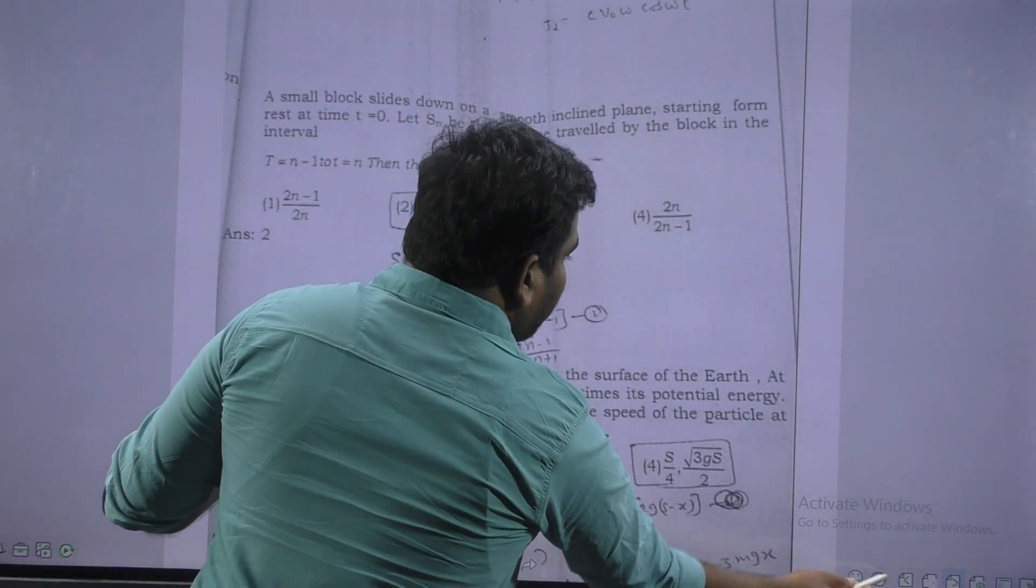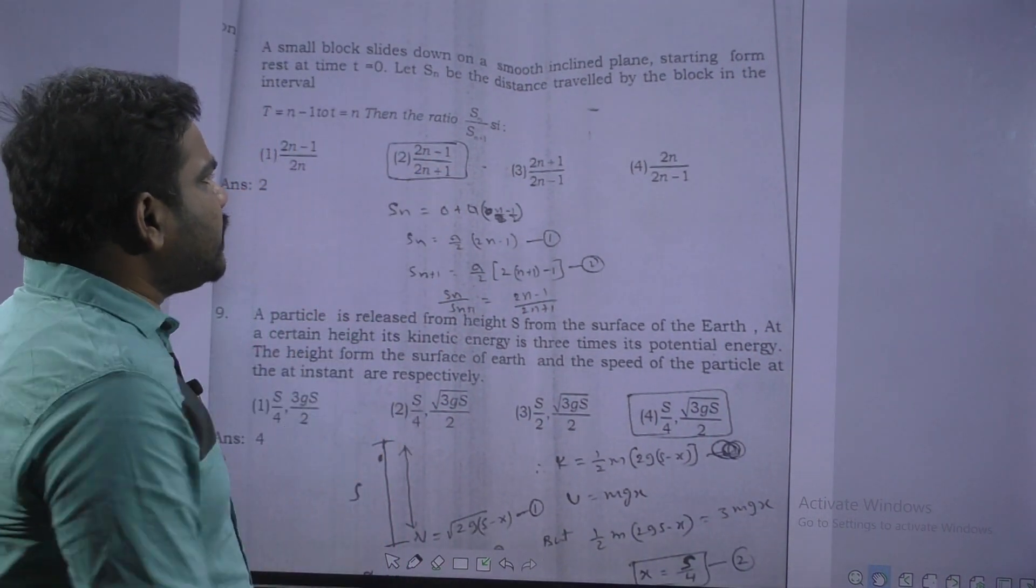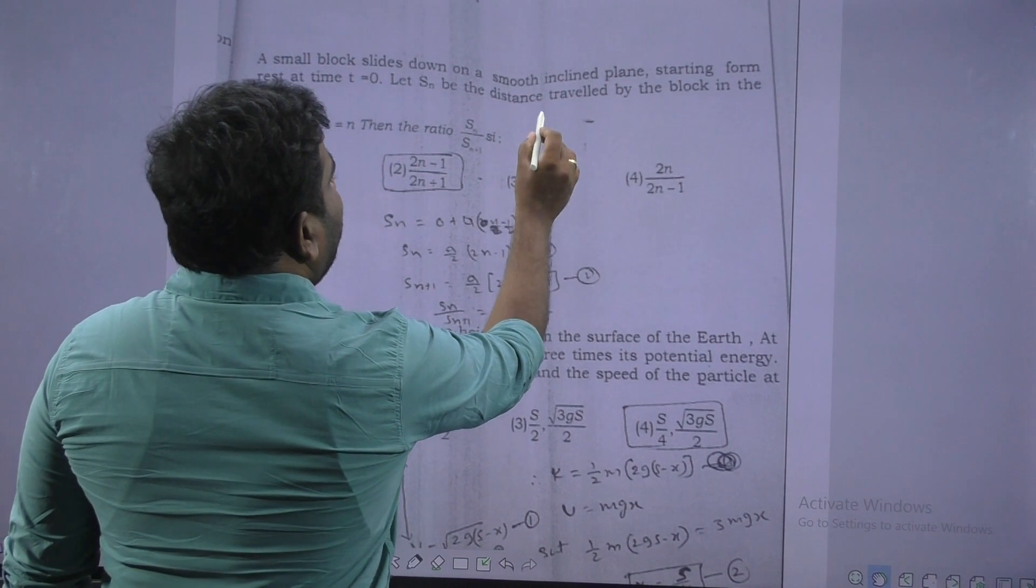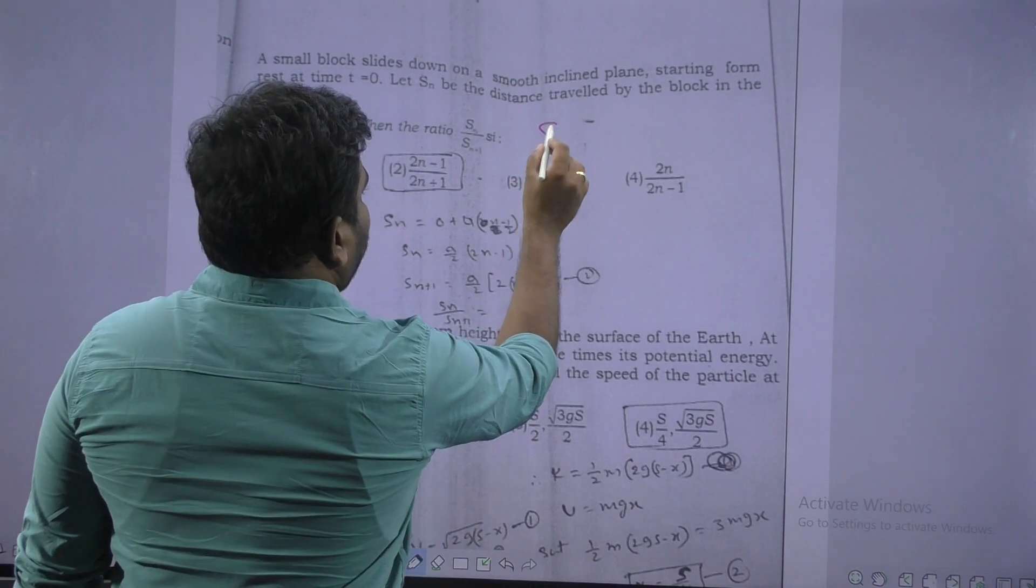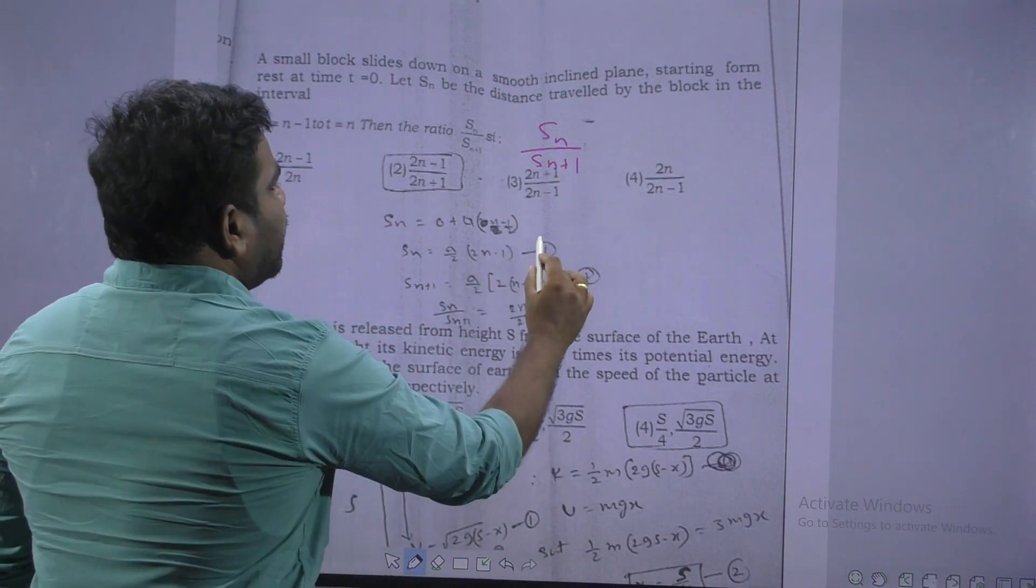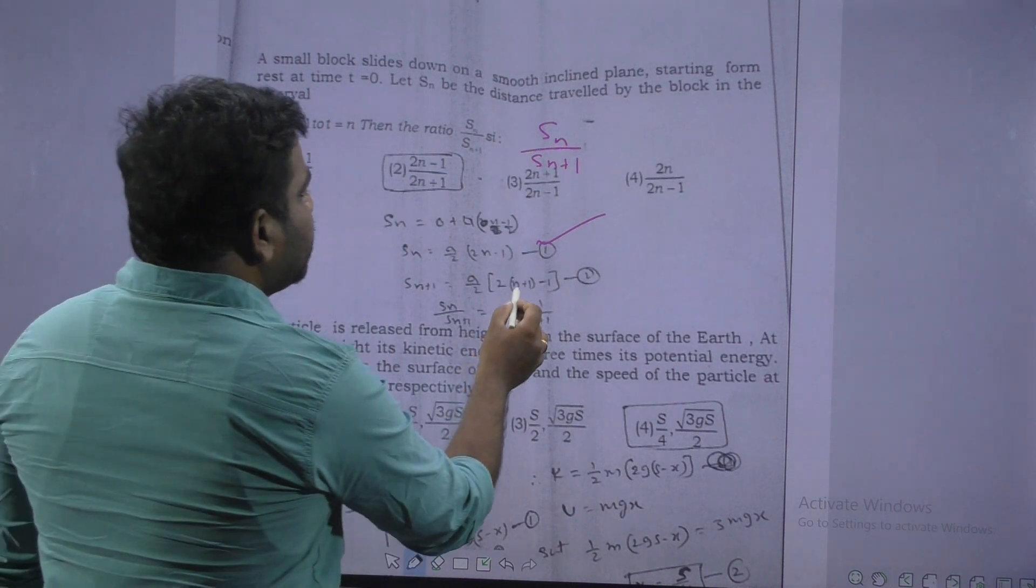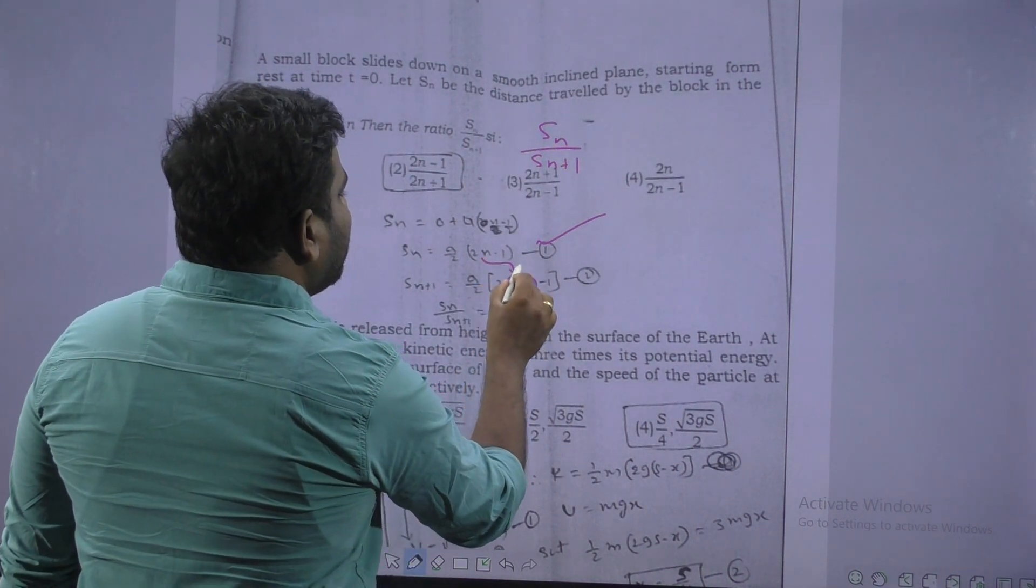Next question. Distance travelled in nth second to distance travelled in n plus 1 second, direct formula. In nth second, a by 2 into n minus 1. N plus 1 second, just put in the place of n, n plus 1.